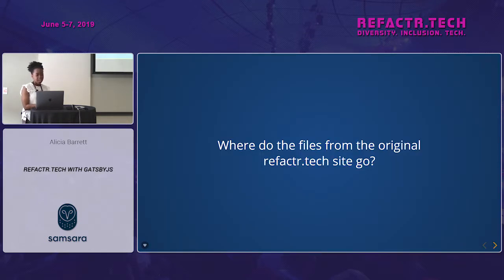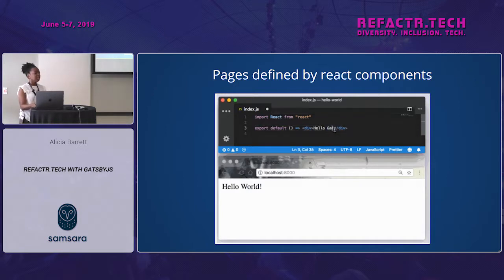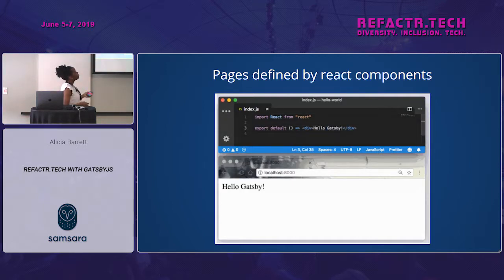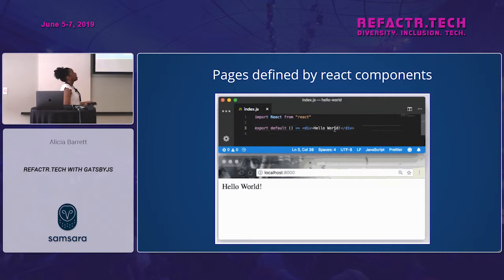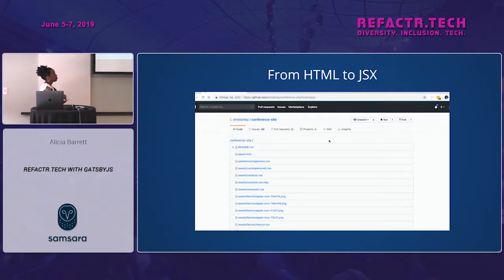Now that I have this new Gatsby project, where do the original refactor.tech files go? In order to create a page in my Gatsby site I have to define a React component within the pages directory. In this gif, you're seeing a file called index.js under the pages directory, and in that file I'm defining a React component that is my home page.